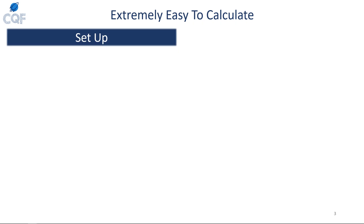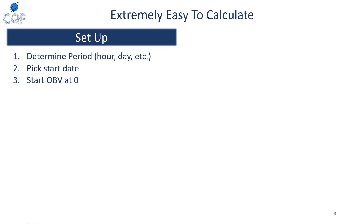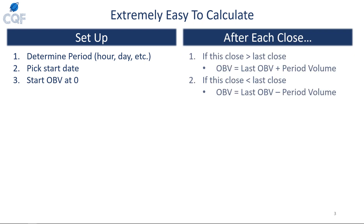OBV is really easy to calculate, and its simplicity has some pros and cons. First, you need to determine your period — whether you're looking at hours, days, weeks, or minutes. You have to pick a start date, which generally is going to be the left side of your chart. You can start the OBV value for the first day at zero. Then after every close, you determine if the price went up or down. If the close is greater than the previous close, you add the volume of that period to the last OBV.